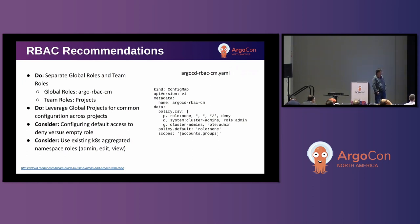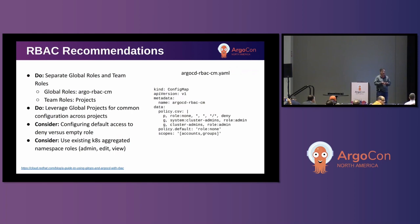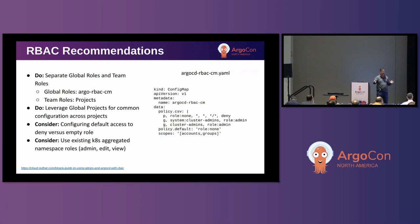From an RBAC recommendations standpoint: do separate your global roles and your team roles. If you put all your roles in the Argo RBAC config map, it gets unwieldy quickly with hundreds or thousands of tenants. I like isolating all the RBAC for teams into app projects — that's really where it belongs. Global roles go in the Argo RBAC config map; team roles go in app projects. I'm also a big fan of global projects, an underused feature that allows an inheritance model among app projects — declare a blacklist once and have all tenant projects inherit it.